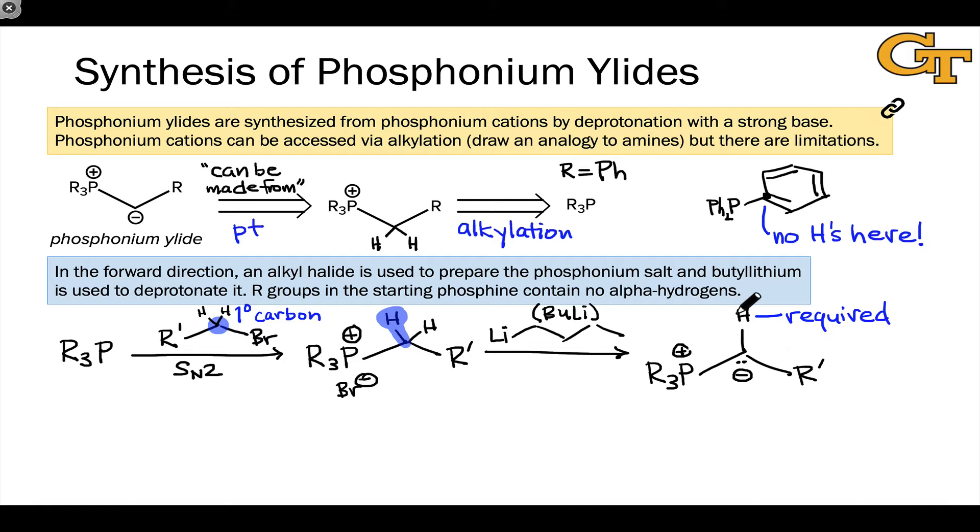Despite this limitation that there must be a hydrogen here, this is a pretty great way to make phosphonium ylides, especially since this R' group here, the group that came along with the primary alkyl halide, can be almost anything, as long as it's not too sterically bulky.